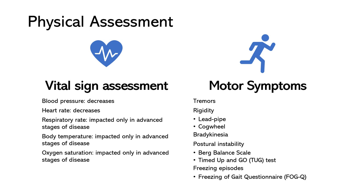Muscle rigidity is another common motor symptom, referring to increased resistance to passive movement of the muscles. This can cause stiffness, tension, and a feeling of tightness in the affected muscles, and it can occur in any muscle group, but is often most noticeable in the limbs, neck, and trunk. Lead pipe rigidity refers to a constant resistance to passive movement where the limb feels uniformly stiff throughout the entire range of motion. Cogwheel rigidity refers to a ratchety or jerky resistance to passive movement, with a sensation of the muscles clicking or catching during the range of motion. Rigidity can also cause postural abnormalities such as stooped posture or loss of normal arm swing during walking, and can significantly impact a patient's mobility, flexibility, quality of life, and can lead to discomfort, pain, and an increased risk of falls.